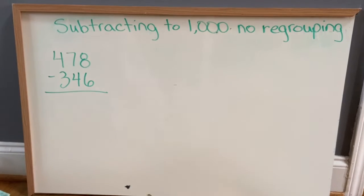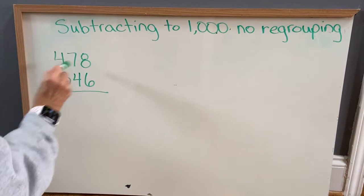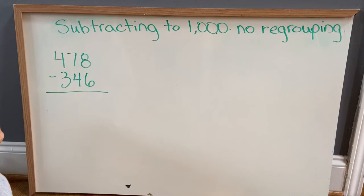Let's do another example of subtracting to a thousand without regrouping. So we've got 478 minus 346.